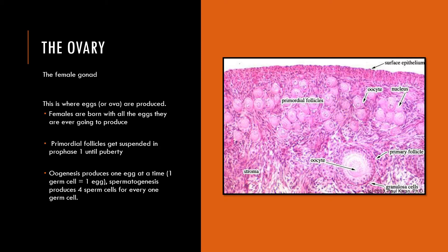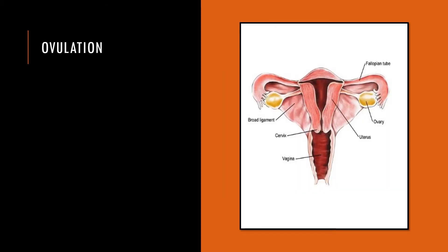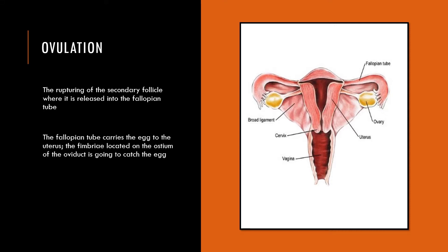That energy difference is why males tend to be a little more promiscuous than females — males can afford to be, whereas females have to be selective about who fertilizes their egg. That's a little evolutionary biology for you. Ovulation is the rupturing of the follicle, releasing the egg into the fallopian tube. Notably, the ovary is not physically touching the fallopian tube — they are not connected. The fallopian tube has what are called fimbriae located on the ostium, or opening, that catch the egg and pull it in.